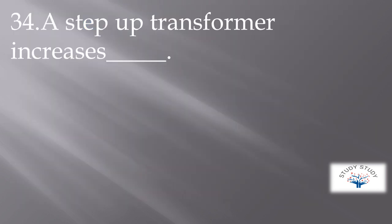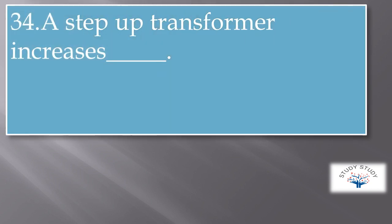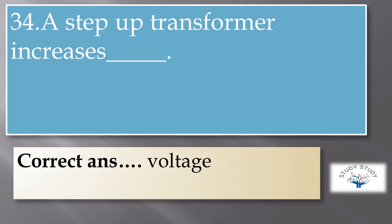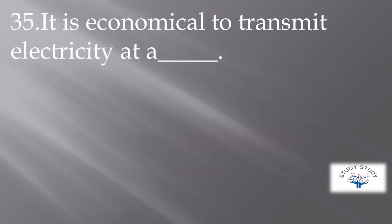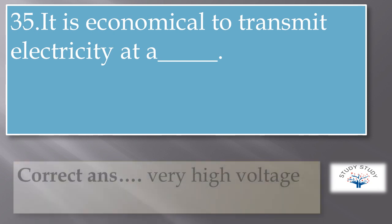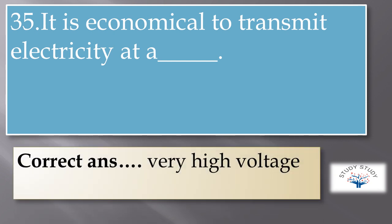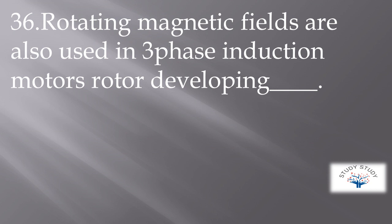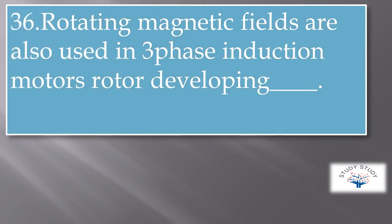The efficiency of a 100 KVA transformer is 0.98 at full as well as half load. It is economical to transmit electricity at very high voltage. Rotating magnetic fields are also used in three-phase induction motors.